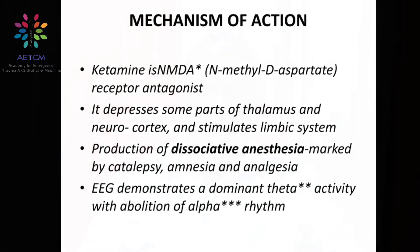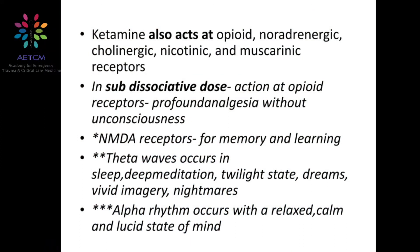Apart from NMDA receptors, ketamine also acts at opioid, noradrenergic, cholinergic, nicotinic, and muscarinic receptors. At sub-dissociative dosages — that is, the lower dosage — ketamine acts at the opioid receptors, and because of this action profound analgesia is produced. It does not produce unconsciousness at these minimal dosages.